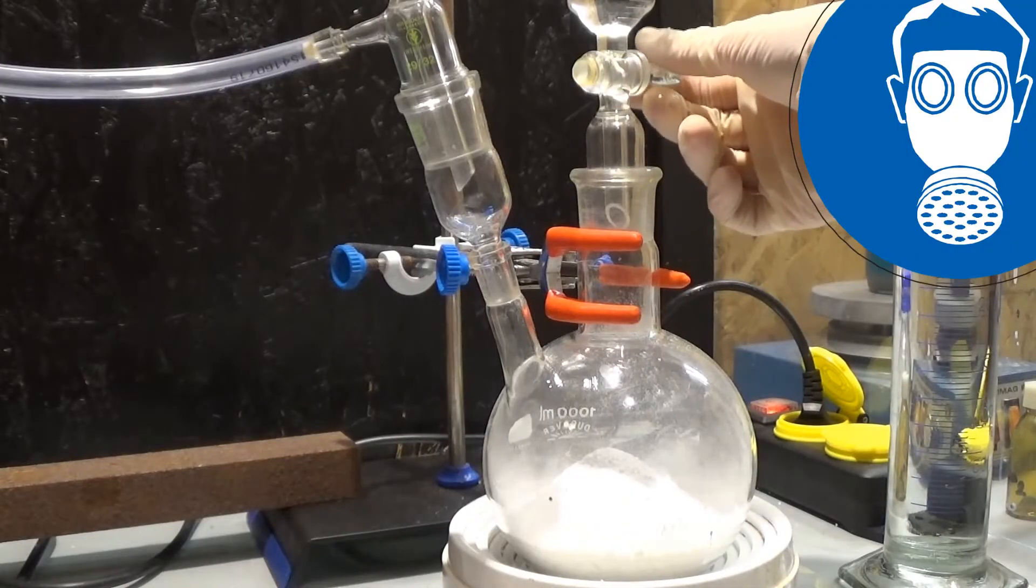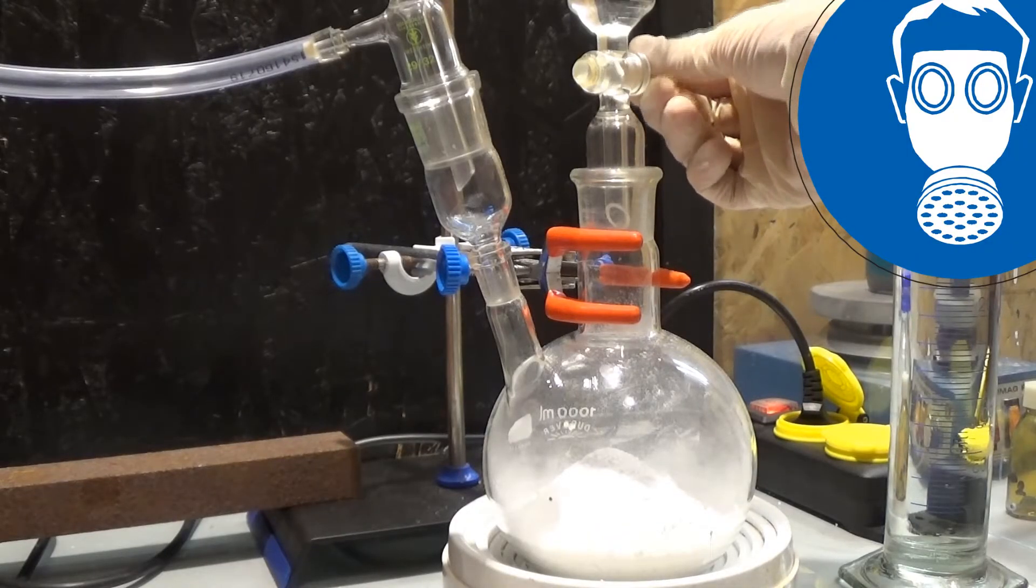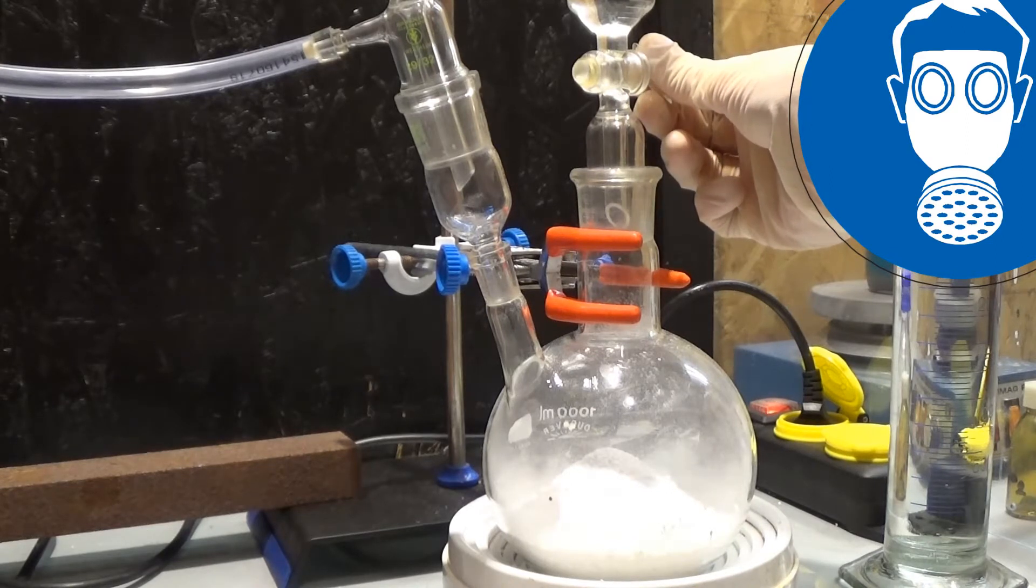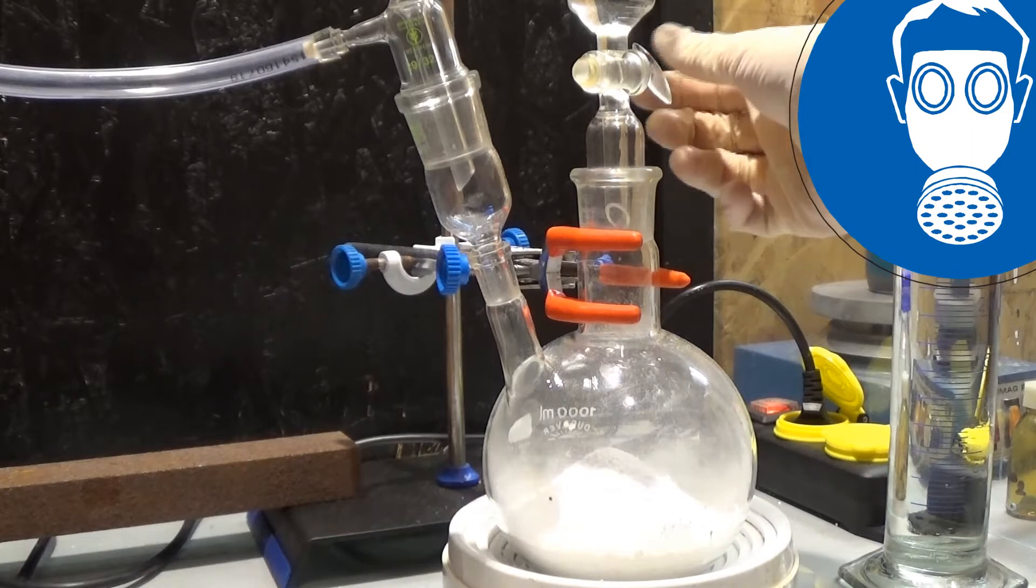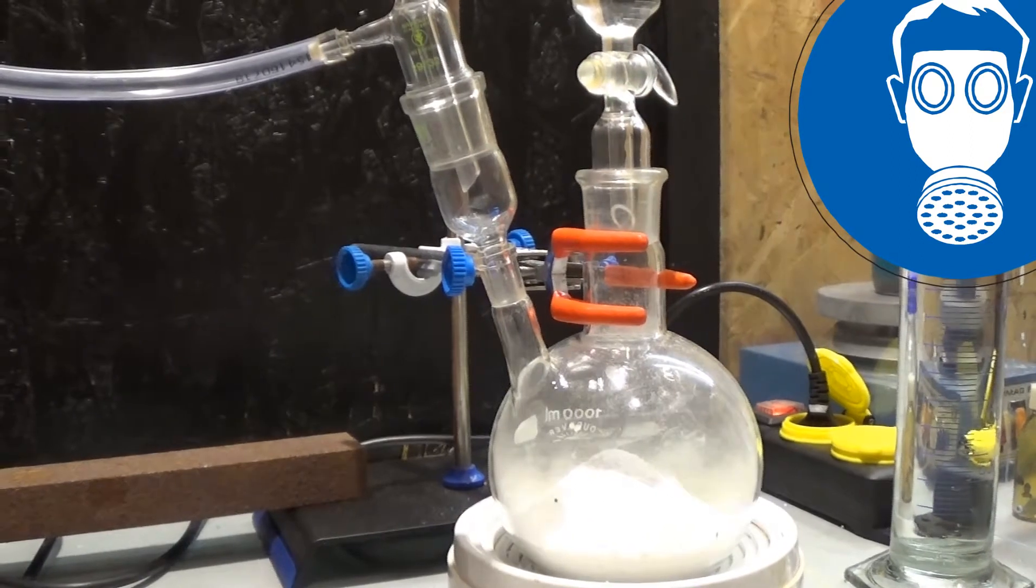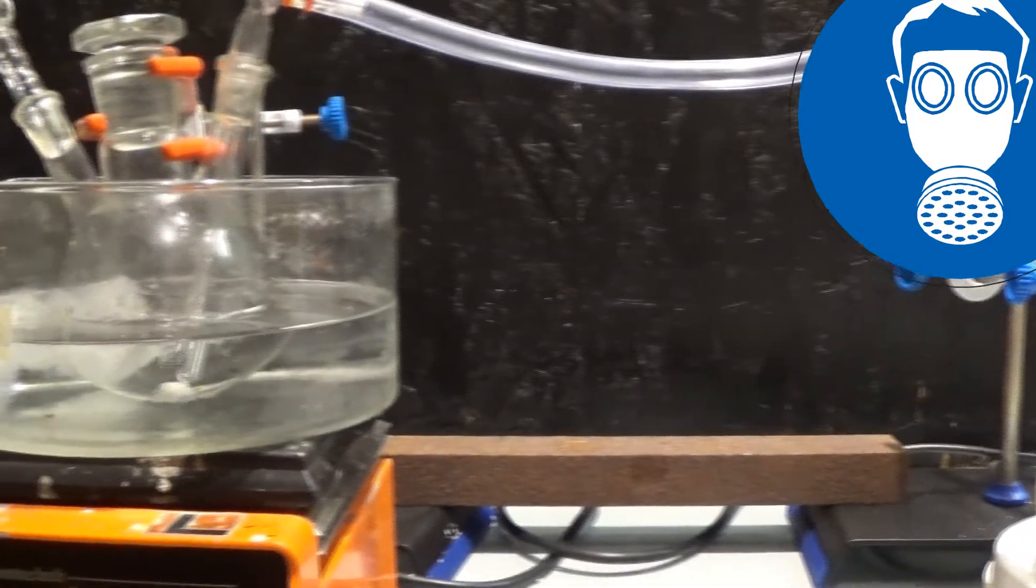To start the reaction I am slowly adding the hydrochloric acid to the trichloroisocyanuric acid. This generates 3 mol chlorine gas out of 1 mol TCCA and 3 mol hydrochloric acid, and in this case 4 mol chlorine gas for our reaction.